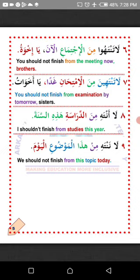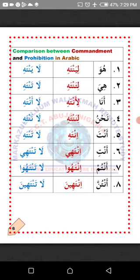Number nine: La nantahi min hazihi al-mawdu' — we should not finish from this topic. I hope you understand. MashaAllah. Now the comparison between Amrun — commandment — and Nahayun — prohibition.